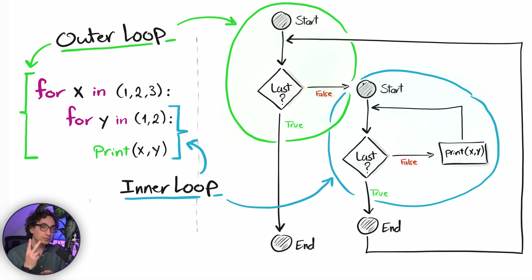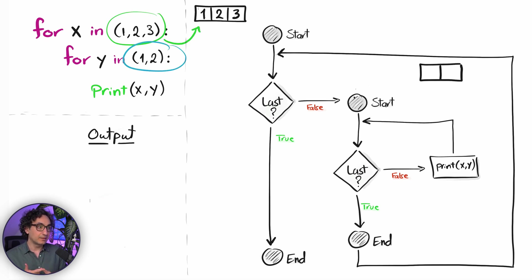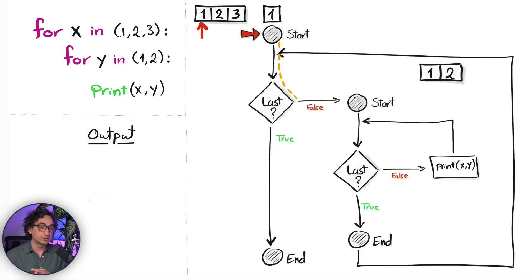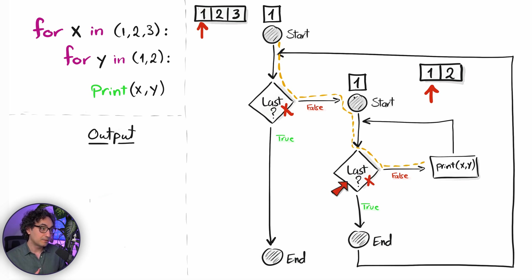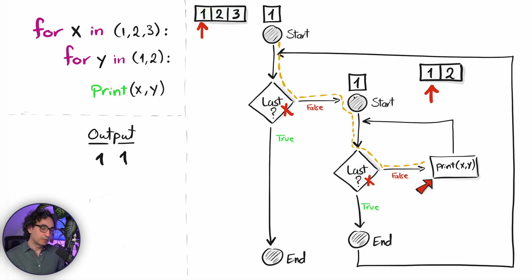When you execute it, Python creates two iterators — one for the outer loop and one for the inner loop. Python starts with the outer loop and asks for the next item; the iterator answers with one. Since we're getting a value we're not at the end, so Python starts the inner loop, asks for the next item in the inner iterator, also gets one, and executes the print — x is one, y is one, so the output shows one one.